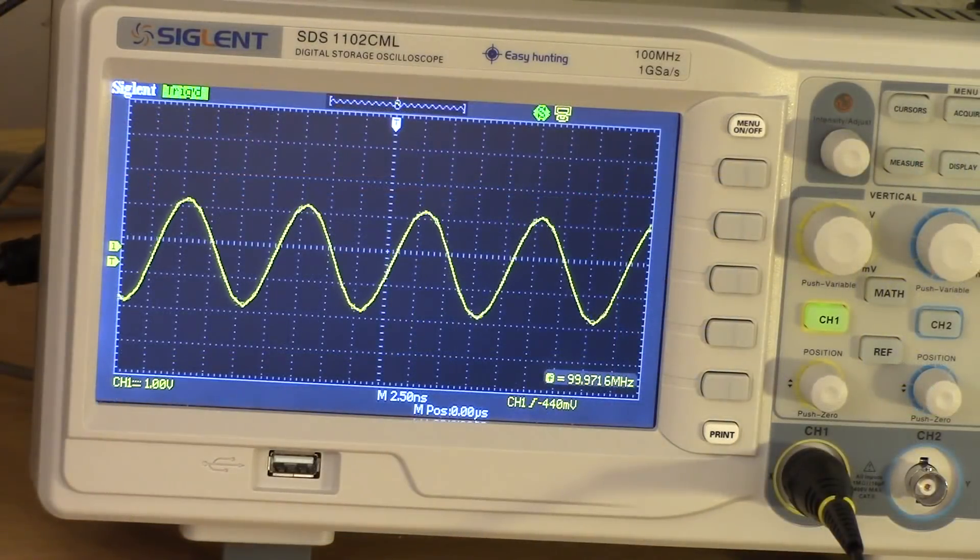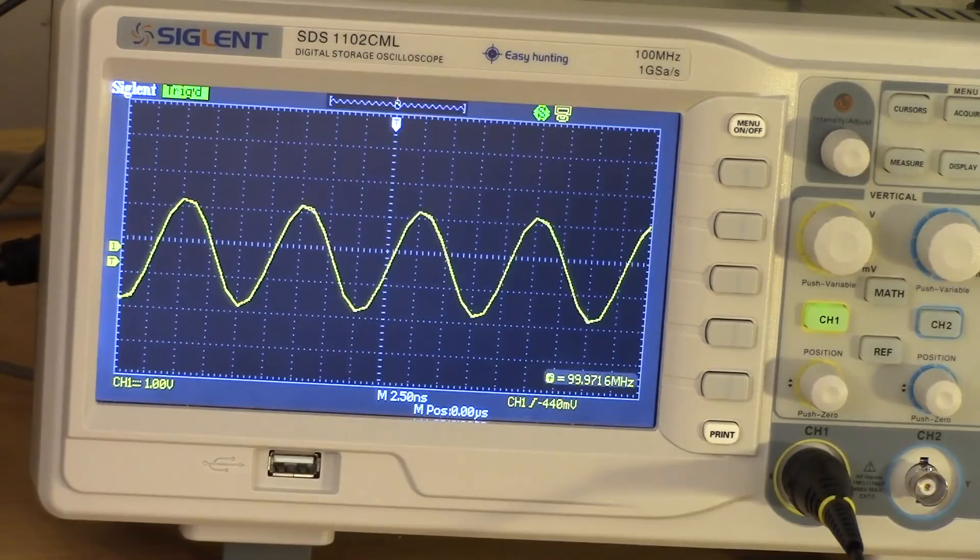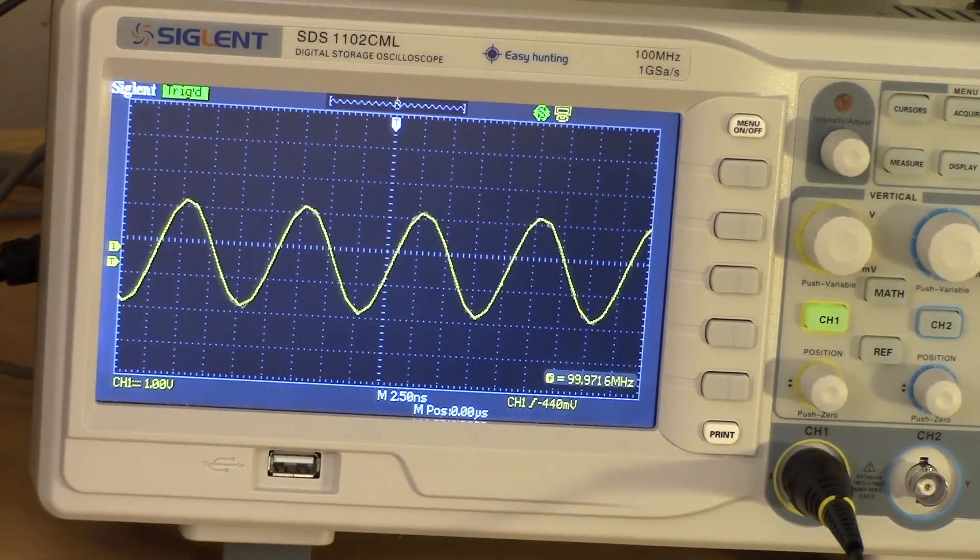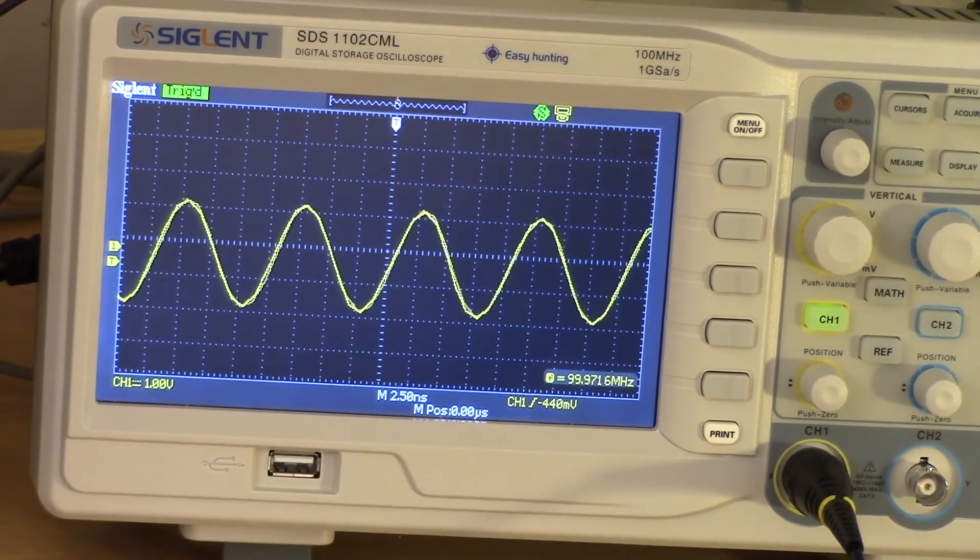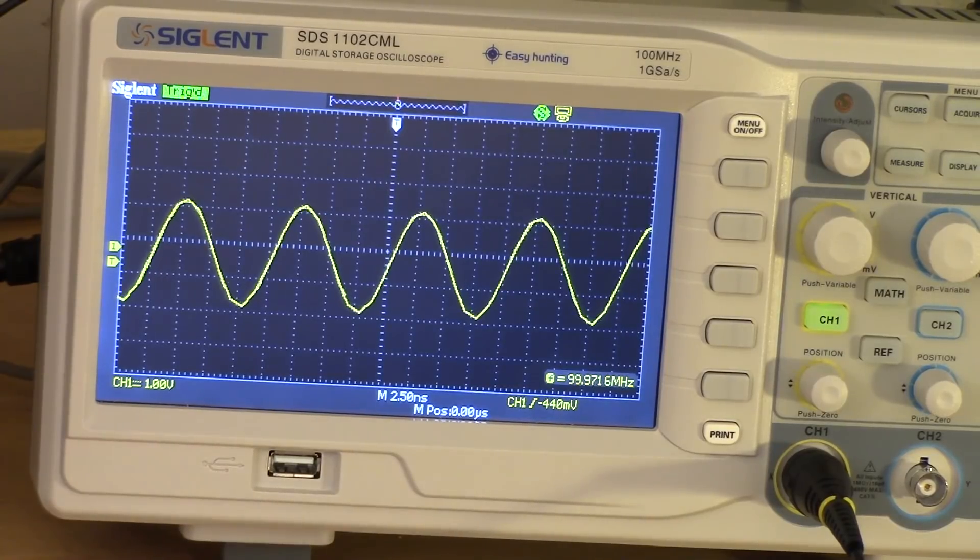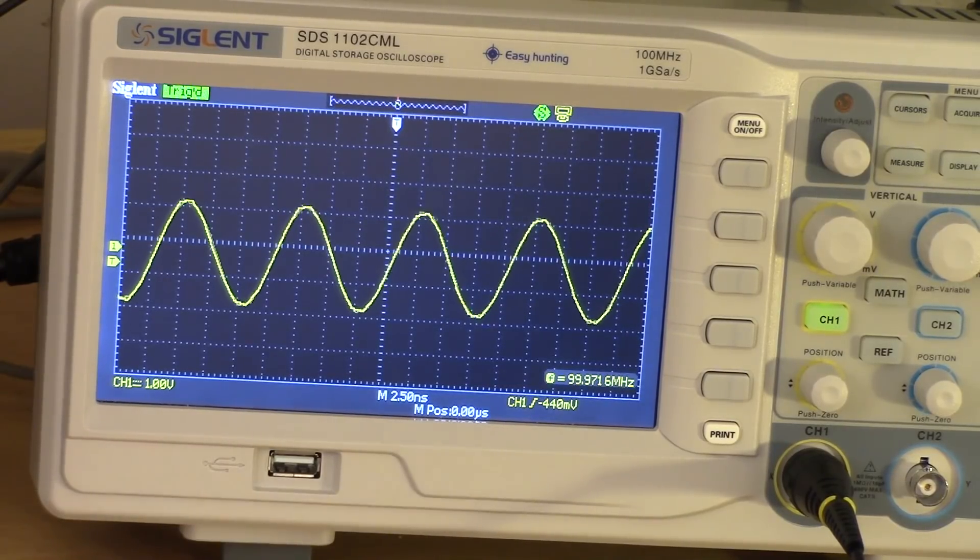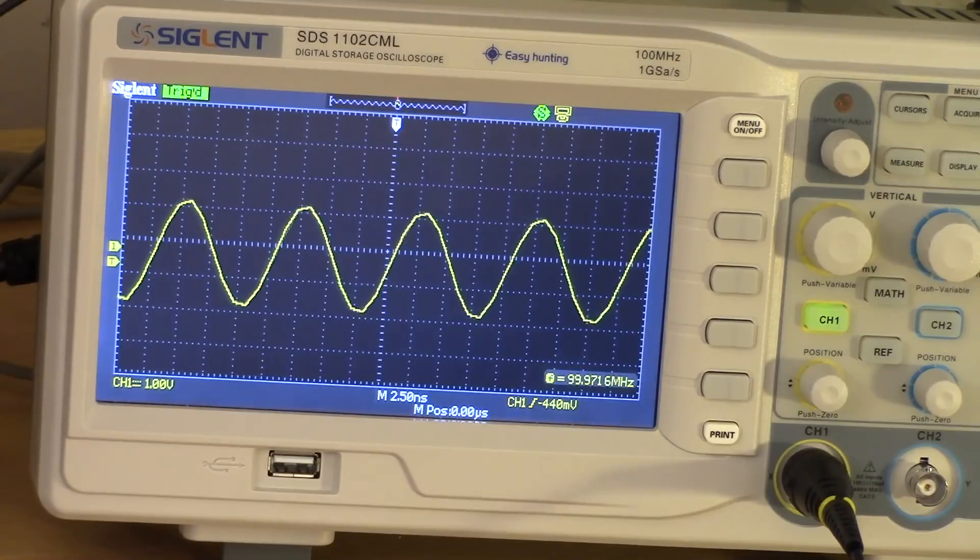Now I've got a 100 megahertz signal going into the oscilloscope. And you can see that the sine wave is a little bit distorted. And that, of course, is because it's a 100 megahertz signal. And there's one gig of samples being taken every second so that there aren't really enough points in there to properly draw a correct sine wave.